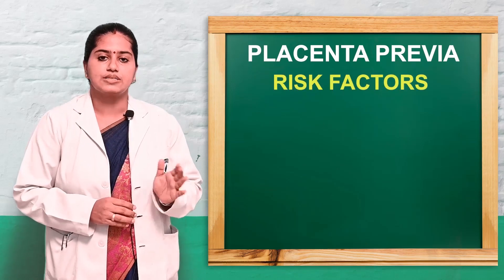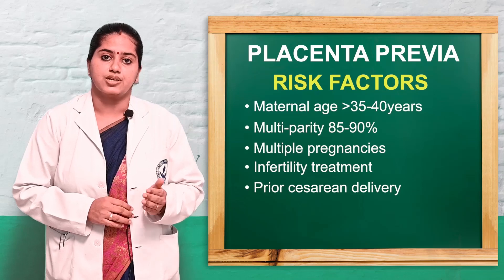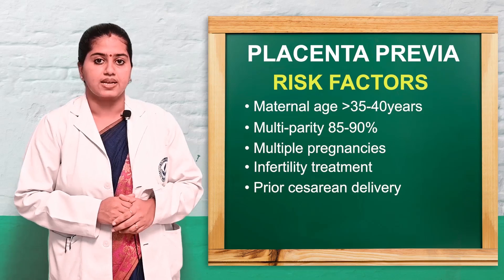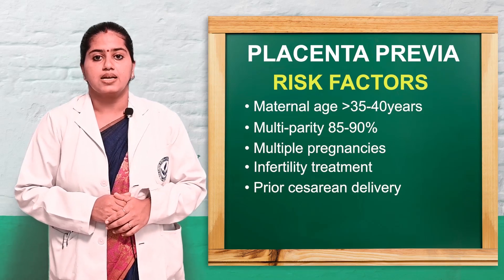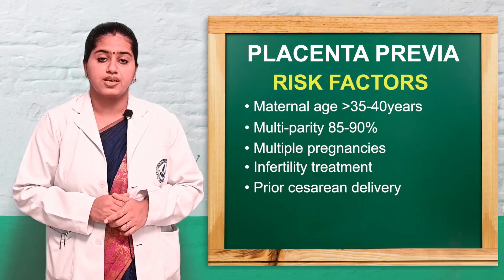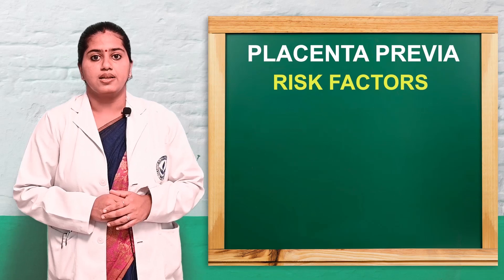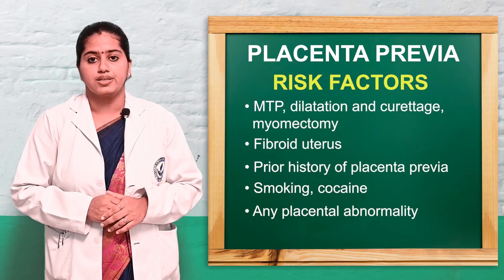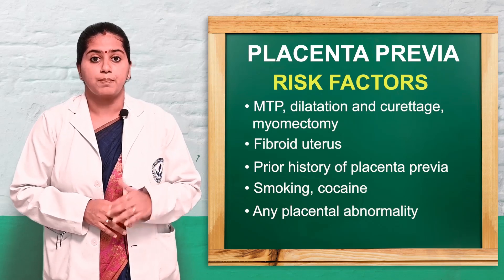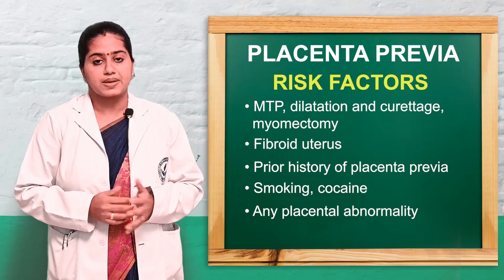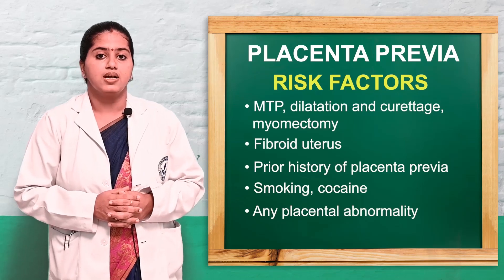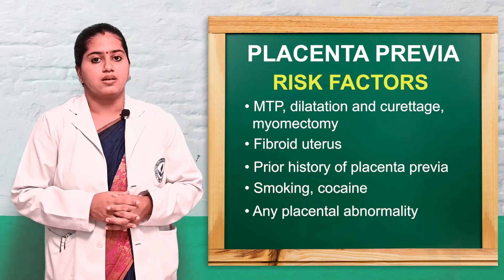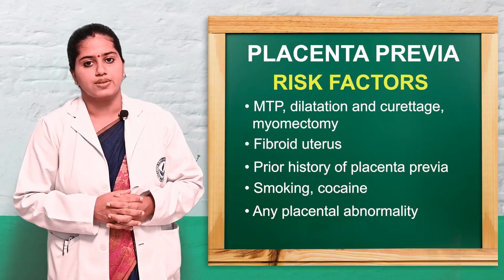Risk factors include age greater than 35 to 40 years, multiparity, multiple pregnancy, any infertility treatment, and previous surgeries such as caesarean section, MTP procedure, D&C, or myomectomy. A fibroid in the uterus, previous history of placenta previa, smoking, and cocaine abuse — which leads to a large placental surface and placental abnormalities — are also risk factors.